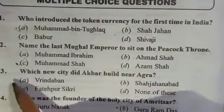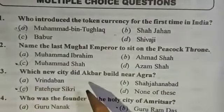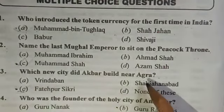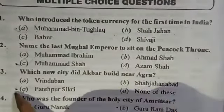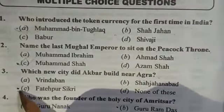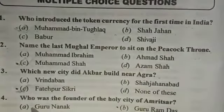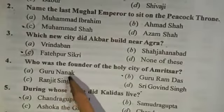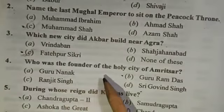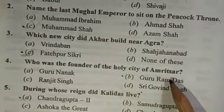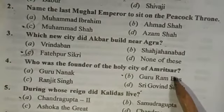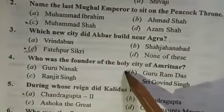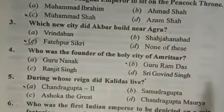Question 3: Which new city did Akbar build near Agra? The answer is Fatehpur Sikri. Question 4: Who was the founder of the holy city of Amritsar? The answer is Guru Ram Das.